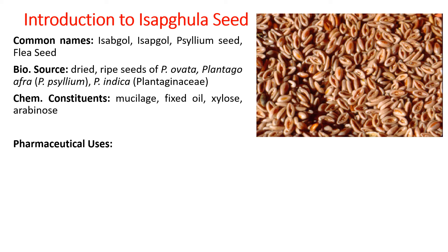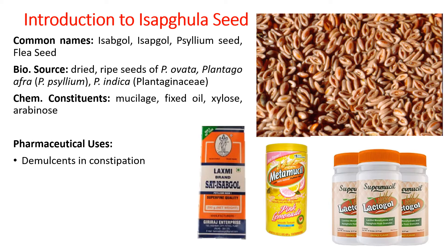The seeds have various pharmaceutical applications. Their chief medicinal property is as a demulcent in the treatment of constipation. Various marketed formulations contain either Isabghul seeds or the husk alone. It is also used as a disintegrating agent in tablets, as the mucilage absorbs water and swells, breaking the tablet. It can also serve as a thickening agent, providing viscosity to aqueous solutions.